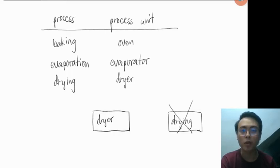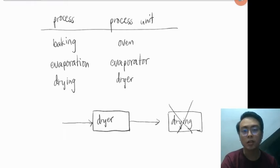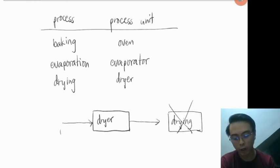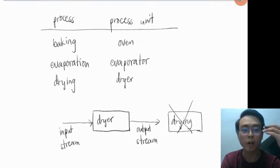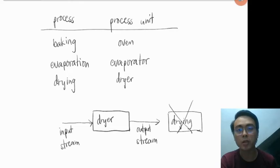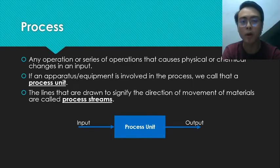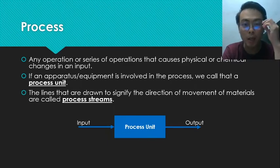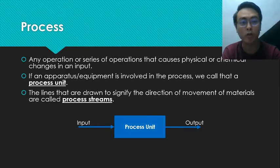For this to become a material balance problem, something has to go in and something has to go out of the box. In material balance problems, you will commonly see streams going in — called input streams — and streams going out — called output streams. Keep in mind we are not limited to one stream. Some processes have one input and one output, but others may have multiple inputs, a single output, or multiple inputs and multiple outputs, which is what makes material balance complicated.